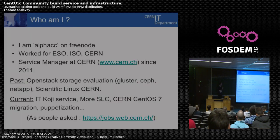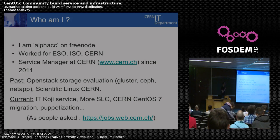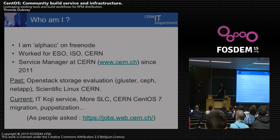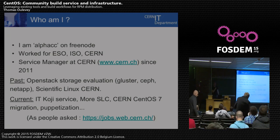Quick word on me. I'm AlphaCC on 3Node if you're looking for me later for talking on the mailing list. I'm a service manager at CERN. I did a bit of OpenStack in the past. Now I'm doing Koji and still doing a bit of Scientific Linux — I'm part of the main team doing Scientific Linux CERN, and all the usual stuff you do as a system administrator: virtualization, migration to new versions. If you want a job, you can go there — there are a few openings. And if you are a student, there's a lot of possibility to work for CERN, so please do.